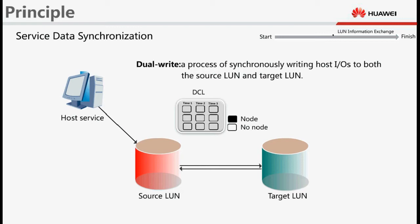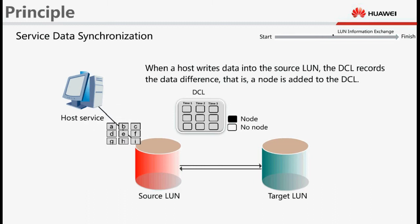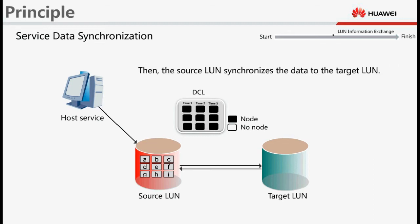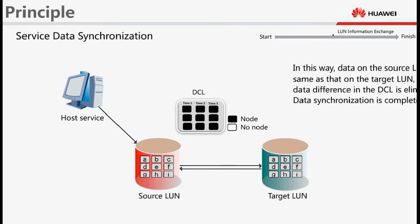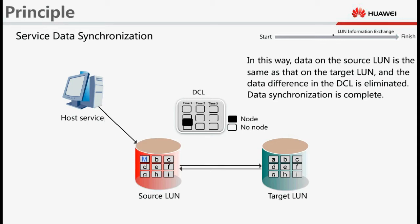How can Smart Migration ensure data consistency? When a host writes data into the source LUN, the DCL records the data difference — that is, a node is added to the DCL. Then the source LUN synchronizes the data to the target LUN. In this way, data on the source LUN is the same as that on the target LUN, and the data discrepancy in the DCL is eliminated. Data synchronization is complete.